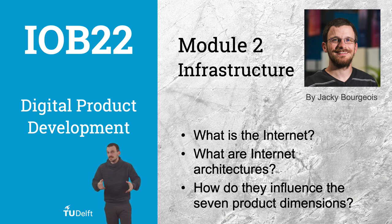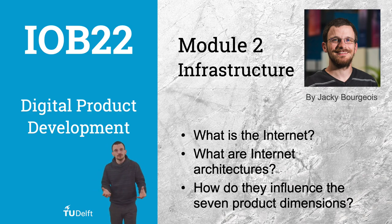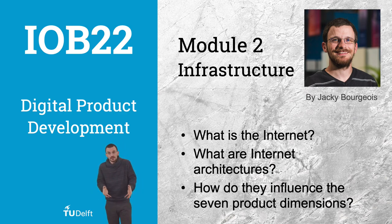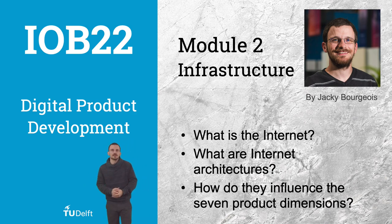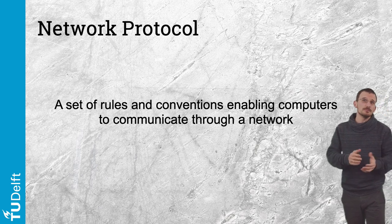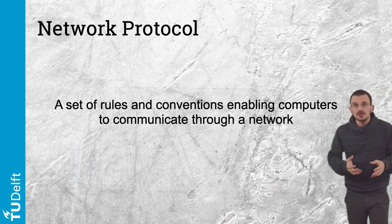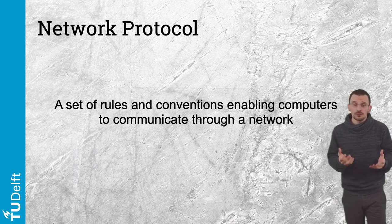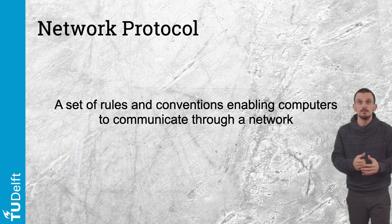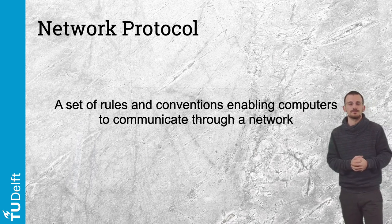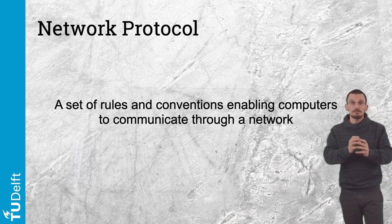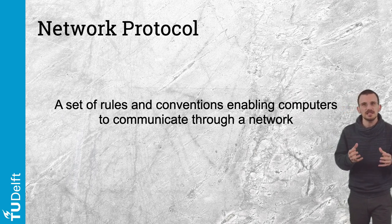The Internet is a global network connecting computers — it is even a network of networks. At home or at a university, it is a local network which is itself connected to the network of an Internet provider. To make this work across many different computers and manufacturers, this communication needs rules: network protocols, a set of rules and conventions enabling machines to communicate through a network, making sure that both machines speak the same language to understand each other's messages.